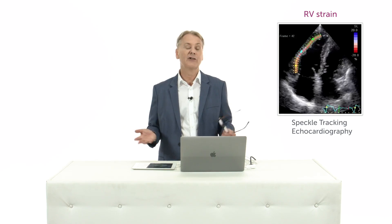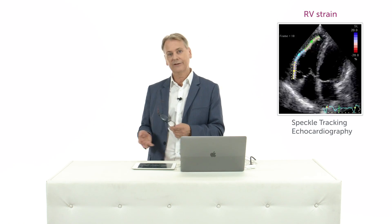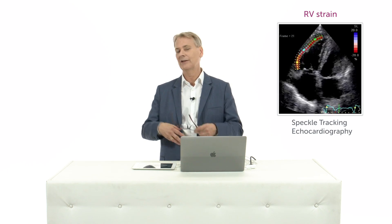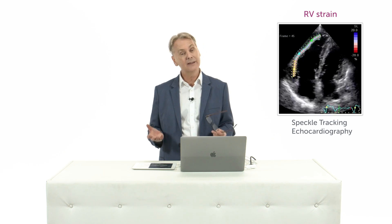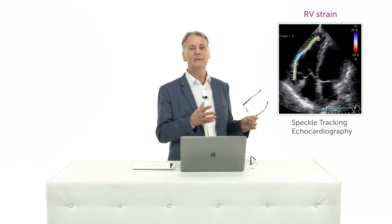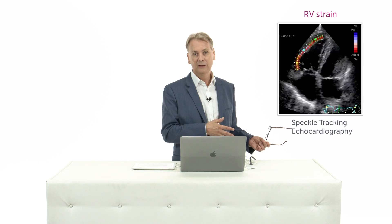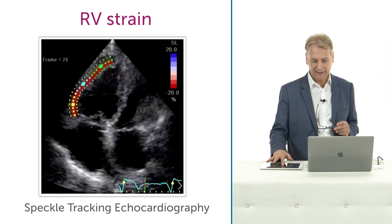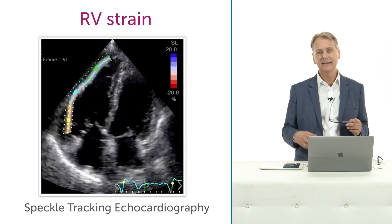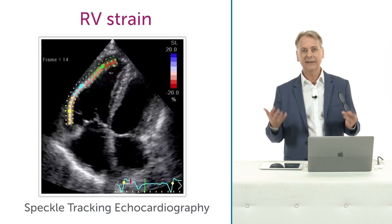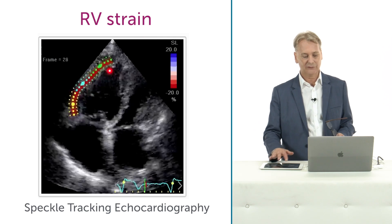The left ventricle was the first ventricle that we used speckle tracking on, and there's just so much data showing it's an early marker of left ventricular function. But there's also an increasing amount of data on the right ventricle showing that it works quite nicely. We first define which parts of the right ventricle should be tracked — in this case we're only tracking the lateral wall — and then we perform the analysis, and the system gives us a percentage value of contraction of the lateral wall.